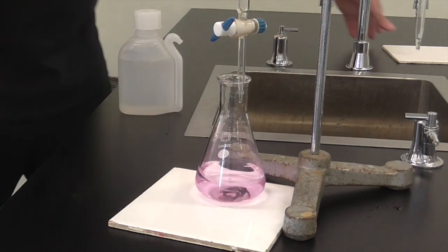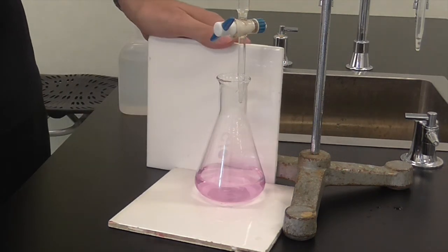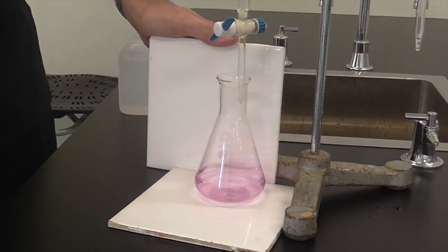Give it a shake and see what happens to the colour. So we've got our pink colour that we're looking for, give it a shake, let it sit and pop the tile behind it and that's a permanent colour change. So that's the end point of the titration.